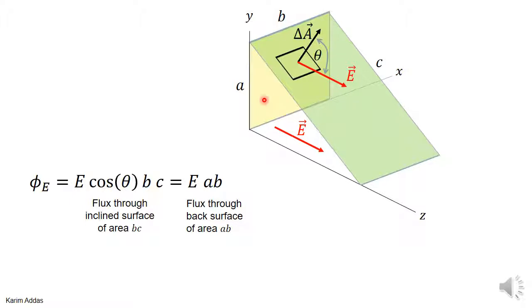This confirms that in the concept of electric field lines, any field line that goes through the back surface also goes through the inclined surface, and vice versa.